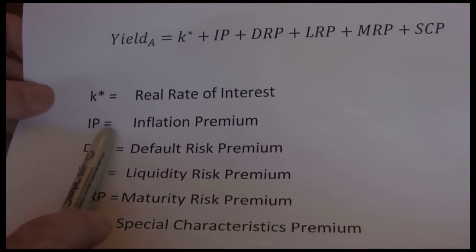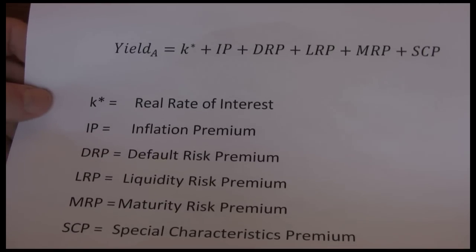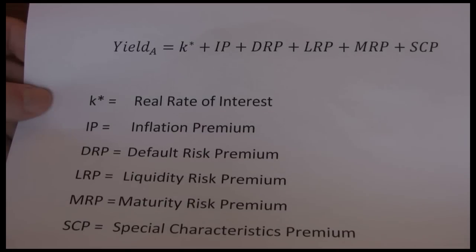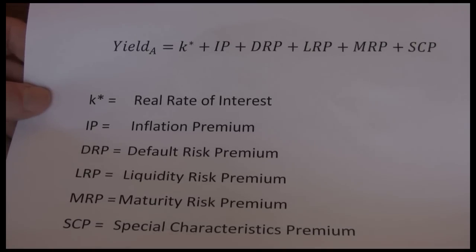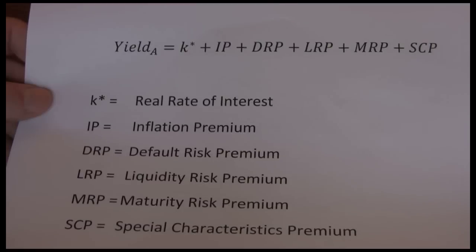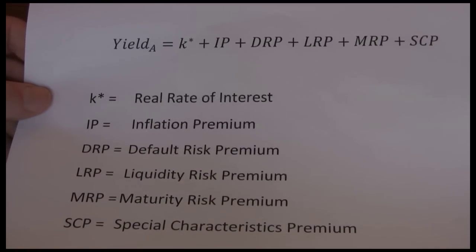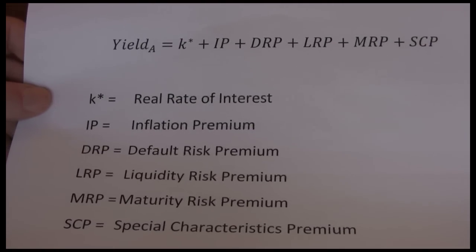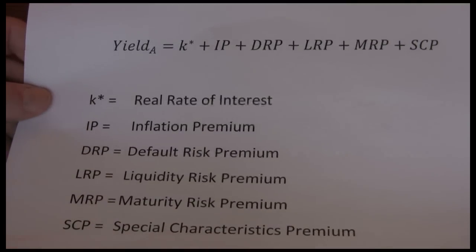Next up is the inflation premium. The idea is that in order to keep my purchasing power, I need to earn a rate of return at least equal to the inflation rate. If inflation goes up by five percent and I earn a three percent rate of return, I'm actually losing money — I've lost two percent of my purchasing power. So investors are going to demand a higher rate of return when they think inflation is going to be higher. This inflation premium should equal the expected annualized rate of inflation over the life of the security. So if we're purchasing a 10-year bond, we forecast the average annualized inflation over the next 10 years and add that to our real rate of interest.